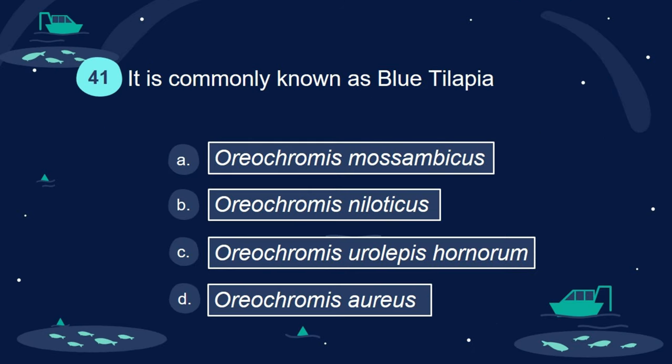Question 41. It is commonly known as blue tilapia: A. Oreochromis mossambicus. B. Oreochromis niloticus. C. Oreochromis urolepis hornorum. D. Oreochromis aureus.